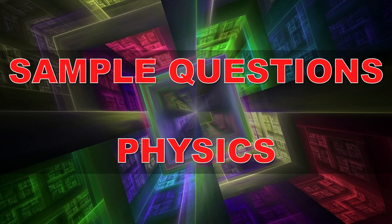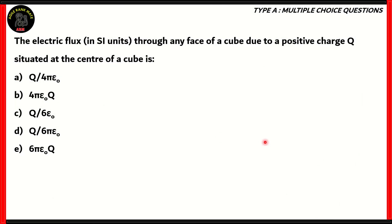Let's look at our first practice question of the day. The electric flux in SI units through any face of a cube due to a positive charge Q situated at the center of a cube is: Q by 4 pi epsilon 0, 4 pi epsilon 0 Q, Q by 6 epsilon 0, Q by 6 pi epsilon 0, or 6 pi epsilon 0 times Q.